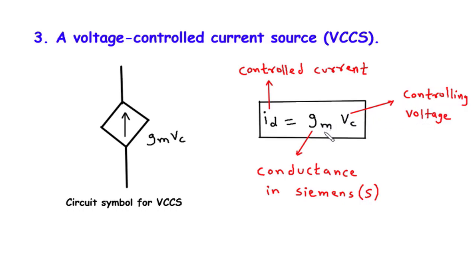The key factor that determines the current flowing through the VCCS is the conductance, represented by GM. Conductance is measured in Siemens (S) and is the reciprocal of resistance. It quantifies how easily current can pass through a component. Higher conductance values allow for greater current flow for a given controlling voltage, while lower conductance values result in less current.